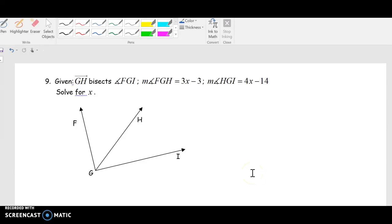So to finish up the lesson here, number nine says given GH bisects angle FGI. You look, right, here's FGI and here's GH. Okay.